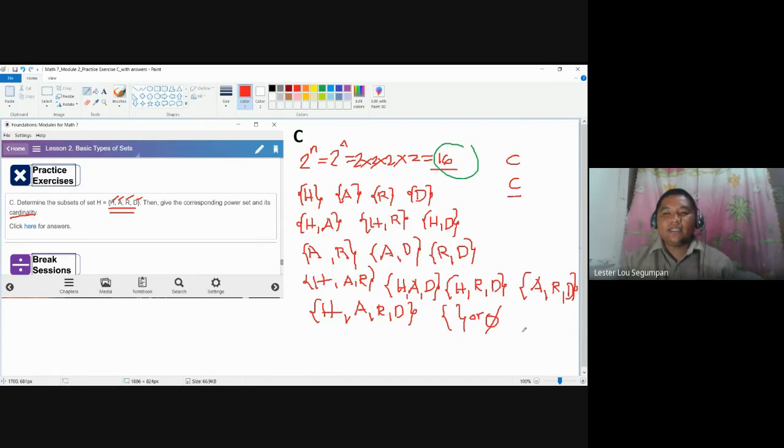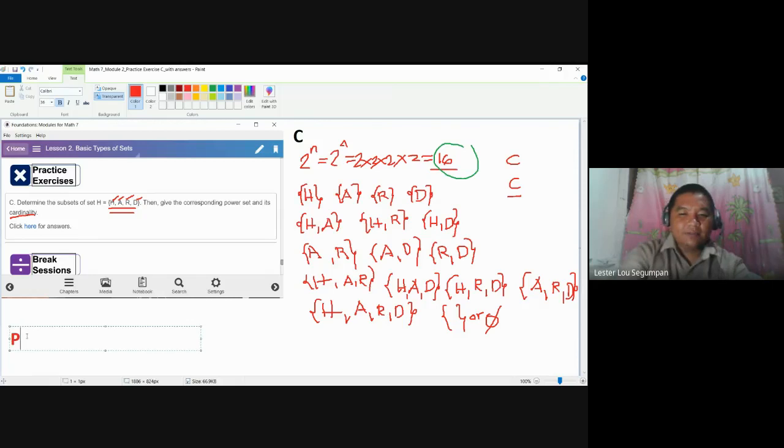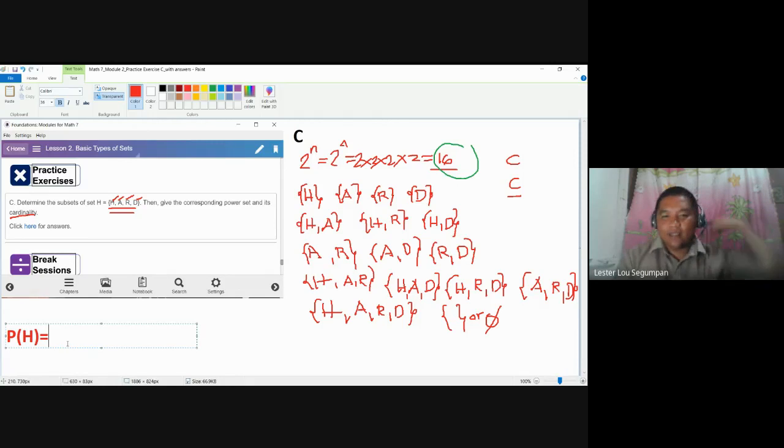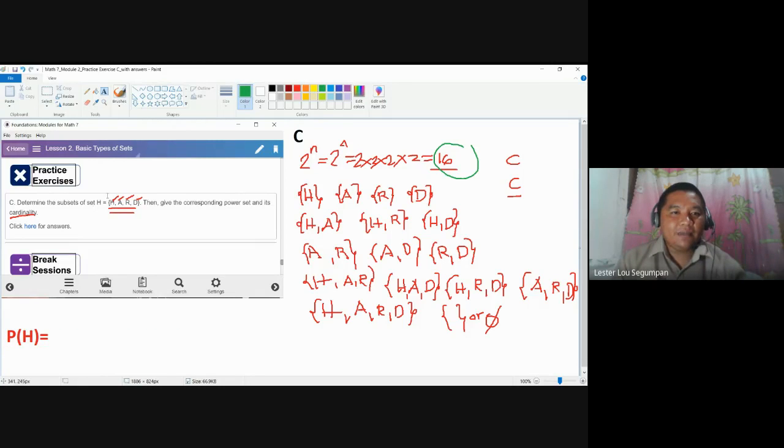So these are the 16 subsets of set h. So once we determine the subsets, we can write the power set. To write power set, we simply write the symbol P, open parenthesis, h, and then close parenthesis. This is read as the power set of h, because that is the label used to denote the given set. So how do we make our power set?